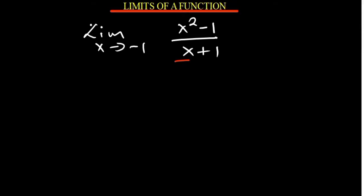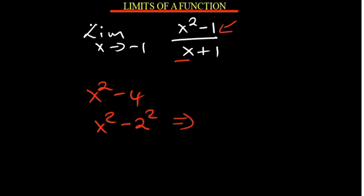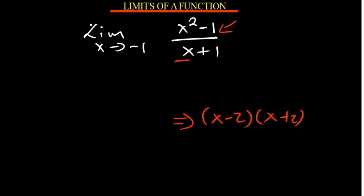It's very important to understand the different ways we can deal with the denominator so that we don't have something undefined. If you look at the numerator, it is a difference of two squares. For example, when you have x squared minus 4, this is the same as x squared minus 2 squared, which can be expressed as x minus 2 times x plus 2. So x squared minus 1 — since 1 is the same as 1 squared — follows the same pattern.